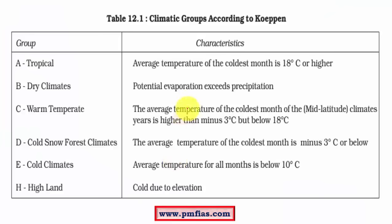Under the Köppen scheme of classification we have different climatic regions, which are mainly divided based on natural vegetation. Natural vegetation in turn is affected by various factors like precipitation, temperature, rain shadow effect, and continentality. Of all these, the most important factor is precipitation, and precipitation is a consequence of various other factors.